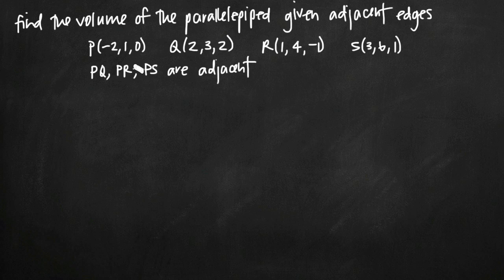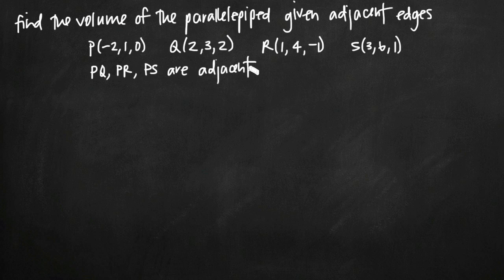In this particular problem, we've been given four points in three-dimensional coordinate space: point P, Q, R, and S. We've been told that the line segment from P to Q, P to R, and P to S are three adjacent edges of our figure.